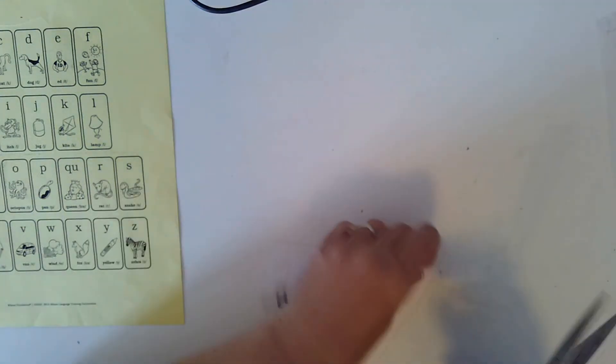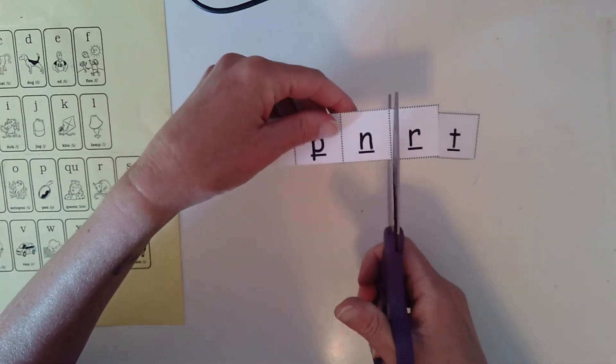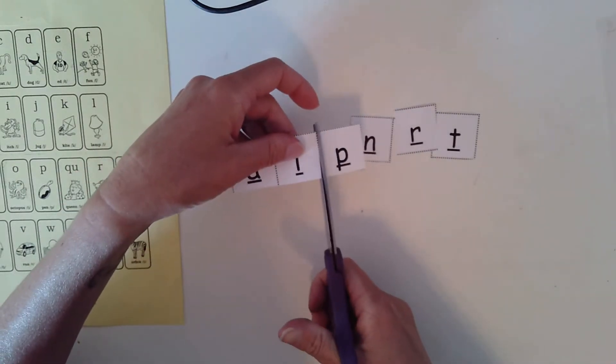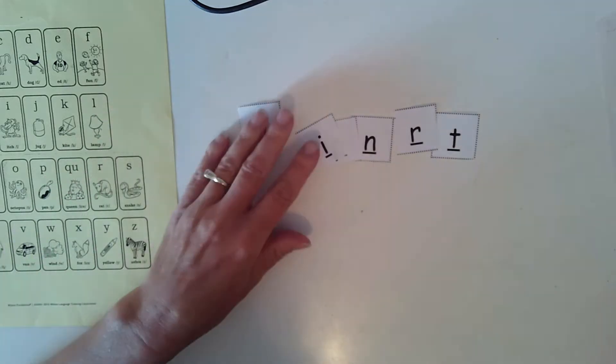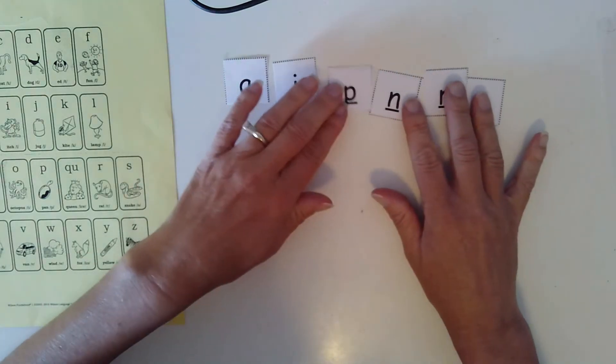And you are going to cut out your letters and put them in a row. Now, Mrs. Stalkup is pretty fast at cutting. I've had a lot of practice. So you may need to pause this video and cut out your letters, and then come on back when you're ready.